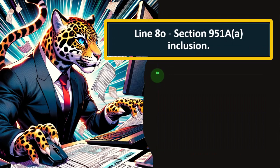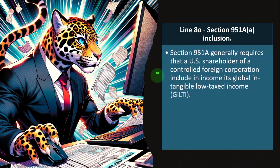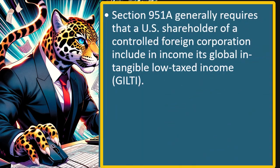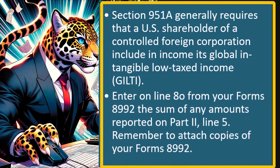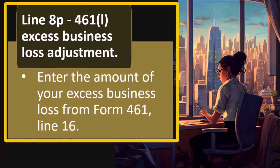Line 8O — Section 951A Inclusion. Section 951A generally requires that a U.S. shareholder of a controlled foreign corporation include in income its global intangible low-tax income, or GILTI. This is again something you wouldn't typically see for normal investors — having a controlled foreign corporation is somewhat of a specialty area. Enter on Line 8O from Form 8992 the sum of amounts reported on Part 2, Line 5, and remember to attach copies of Form 8992.